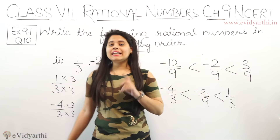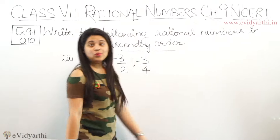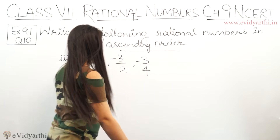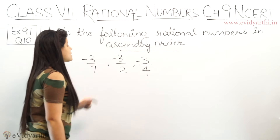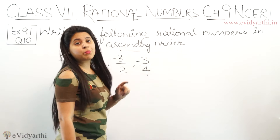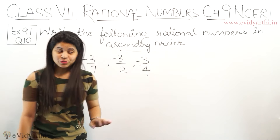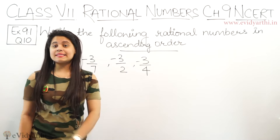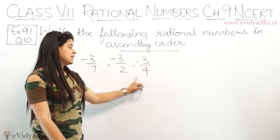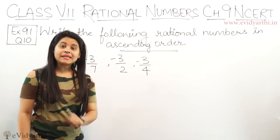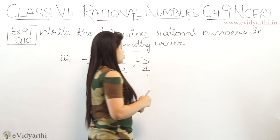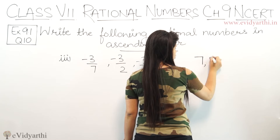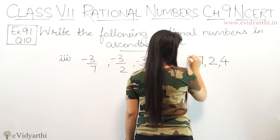Now let's come to the last part. Last part में आपके पास है: minus 3 upon 7, minus 3 upon 2, and minus 3 upon 4. Now यहां पे numerator same हैं, लेकिन आपको denominator तब भी same बनाने पड़ेंगे. So: 7, 2, 4.